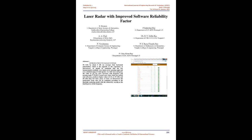Introduction to radar systems. Vertical polarization produces echoes at 94 GHz by about 5 dB, on average, greater than horizontal polarization, which is the opposite to the experience at microwaves.